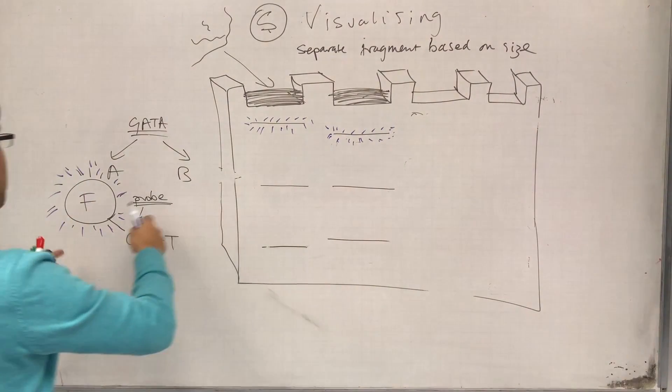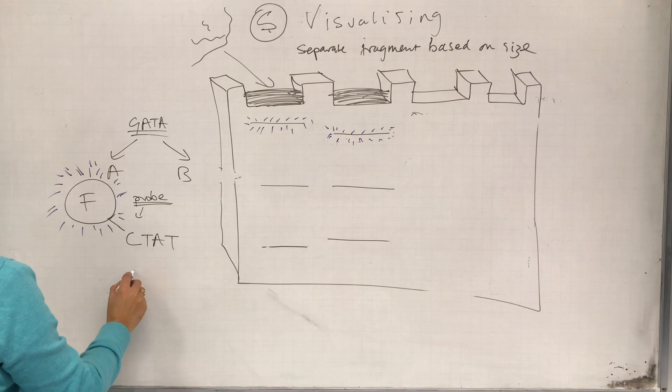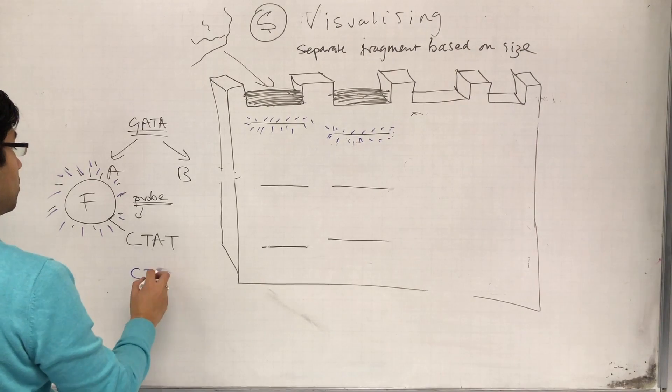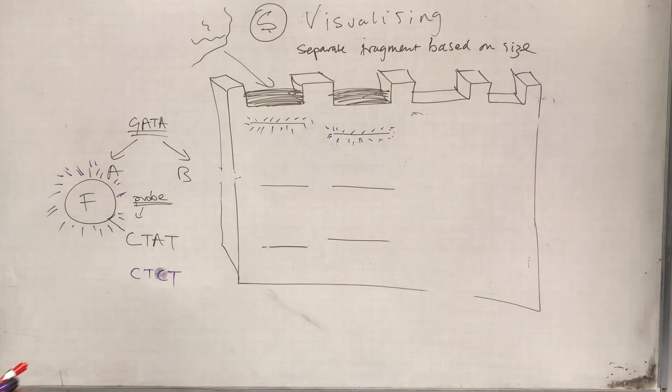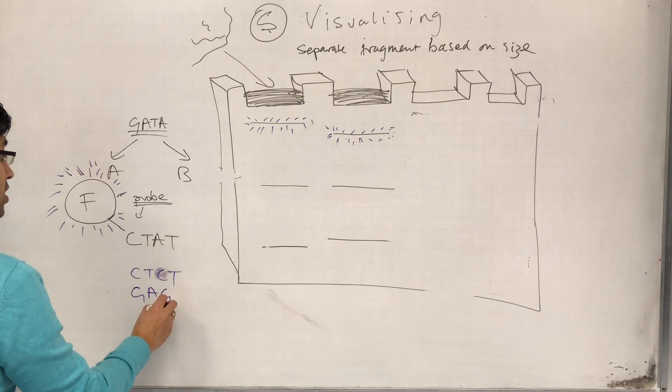So if I compared... So let's say there was a different one. And this one was CTA... CTCT. And then I make a probe that was... GAGA.